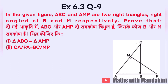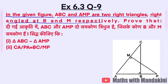The question is: in the given figure, ABC and AMP are two right triangles, right angled at B and M respectively. Prove that triangle ABC is similar to triangle AMP, and CA upon PA is equal to BC upon MP.